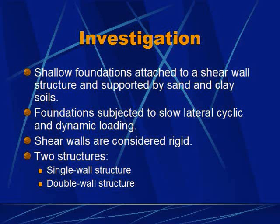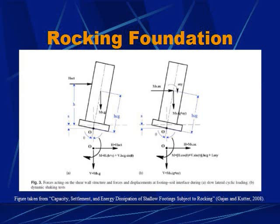Gajan and Cutter investigate shallow foundations attached to shear wall structures and supported by sand and clay soils. The foundations are subjected to slow, lateral, cyclic, and dynamic loading. The shear walls are considered rigid, made of steel or aluminum. Two structures are used in the test: a single wall structure with one shear wall connected to the footing, and a double wall structure with two walls attached to a footing connected by a floor. A rocking foundation can be visualized as a moving contact problem, with the contact area moving from one side of the footing to the other as it rocks.